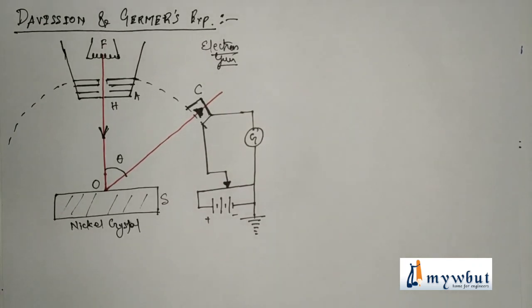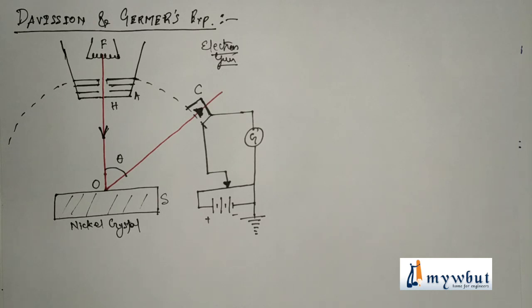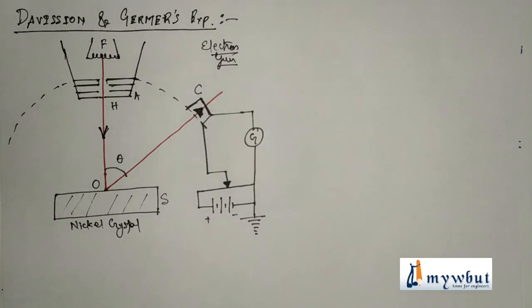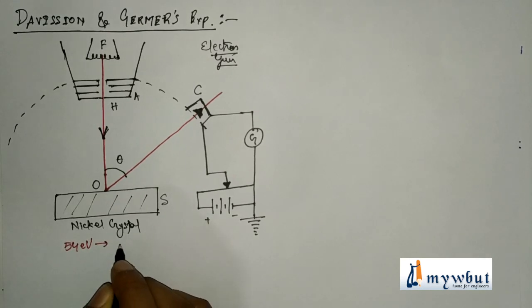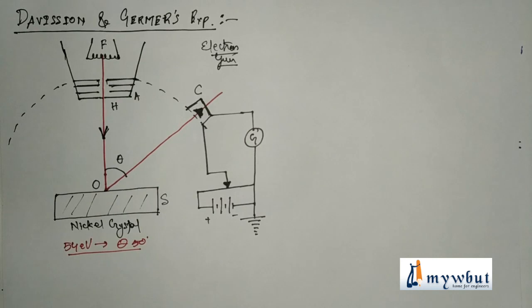From the experiment, a kink begins to appear in the curve at around 44–45 volts of accelerating potential. This spur becomes maximum at V = 54 volts and scattering angle θ = 50°. Beyond 54 volts the spur decreases again. This indicates that electrons with kinetic energy 54 eV at scattering angle 50° suffer maximum scattering, providing evidence for the existence of matter waves.